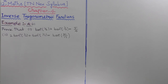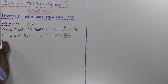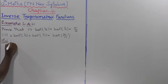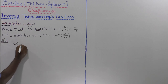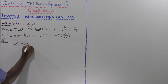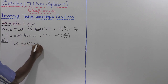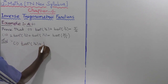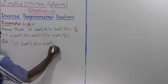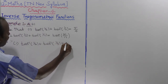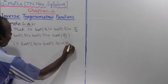Example 4.21: Prove that tan inverse of 1 by 2 plus tan inverse of 1 by 3 is equal to π by 4. Now let us take the first subdivision only. The first subdivision is tan inverse of 1 by 2 plus tan inverse of 1 by 3 is equal to π by 4.